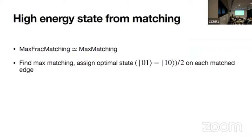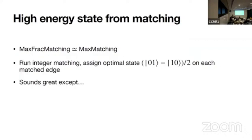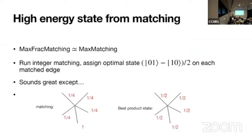So the naive idea could be, find the maximum matching. So in this case would be integer matching. Assign optimal state, the singlet state, on the matched edge. Okay, this sounds good, but here are examples that doesn't work really well. So if it has high degree like this, and if you assign singlet state on single edge, then it forces the rest of the edges to have energy one quarter. On the other hand, if you have the best product state, so for example, if you have zero in the center and one on the leaves, then it has energy half on each edge. So if you add, then the product state has higher energy.